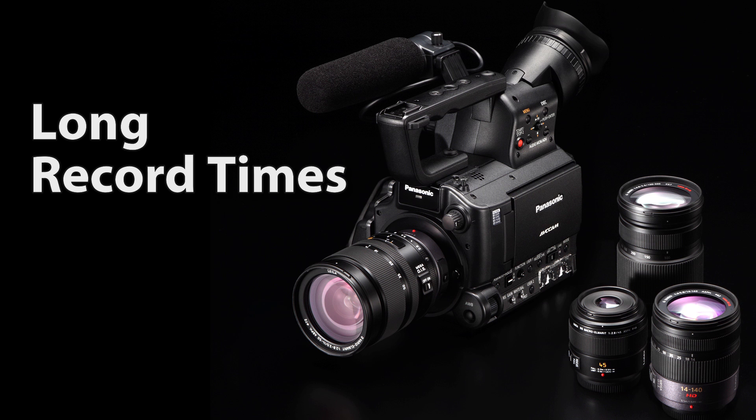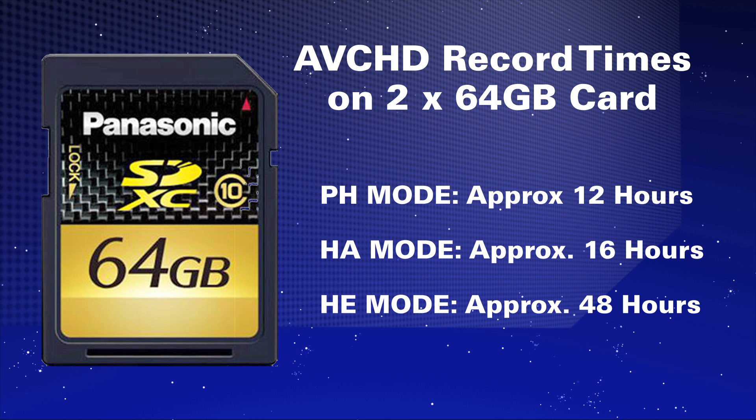With the AF100 and two 64-gigabyte cards in the slots, you're going to be able to record in its best mode — PH mode — for 12 hours. That's a long time: 12 hours. You're not going to have the 12-minute limit you get on DSLRs.